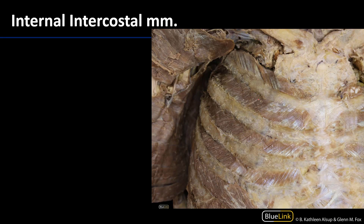The internal intercostal muscles are deep to the external intercostal muscles. Looking at the internal intercostal muscles, we can see that their fibers move inferolaterally. They're more distributed in the intercostal space anterolaterally and less so posteriorly, where they're more membranous and represented by their fascia. When these internal intercostal muscles pull, they tug the ribs downward and inward, decreasing the volume of the thoracic cavity and working with other muscles for forced exhalation.